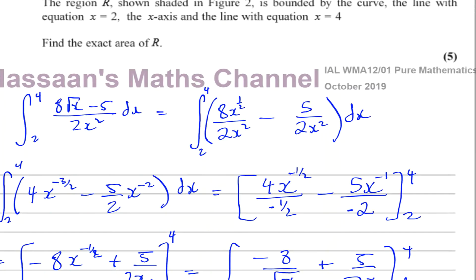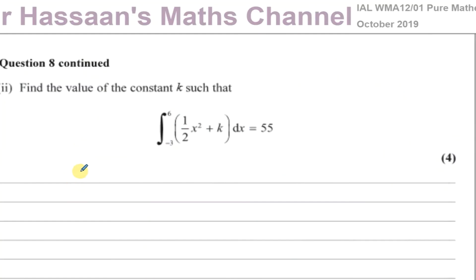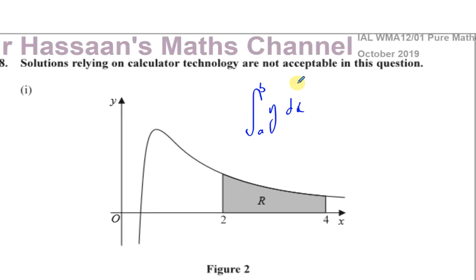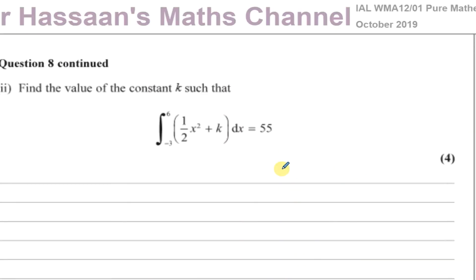That's the answer to number 8 part 1. Part 2 will be done in a separate video. Welcome back — this is part 2 of question 8. We need to find the value of the constant k such that the integral between minus 3 and 6 of the function a half x squared plus k, with respect to x, equals 55.